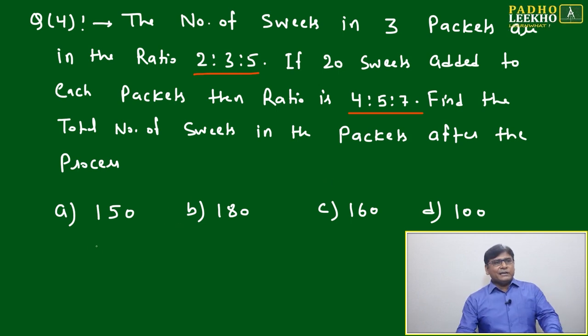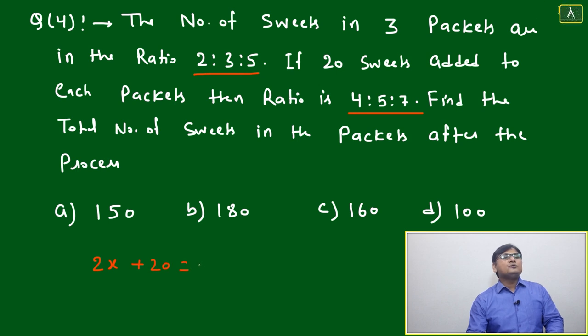You can solve this question in the conventional way. We will take the initial ratio and take x as the common factor. Then we can write 2x, and when 20 suits are added it will become 4y. Here we are taking common ratio y initially and common ratio x.